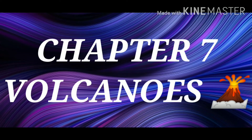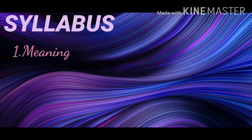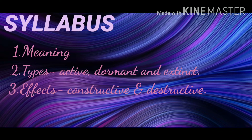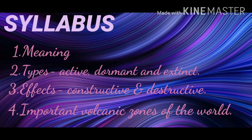Today I am going to deal with Volcanoes, Chapter 7 — its meaning, types: active, dormant and extinct, effects: constructive and destructive, and important volcanic zones of the world.